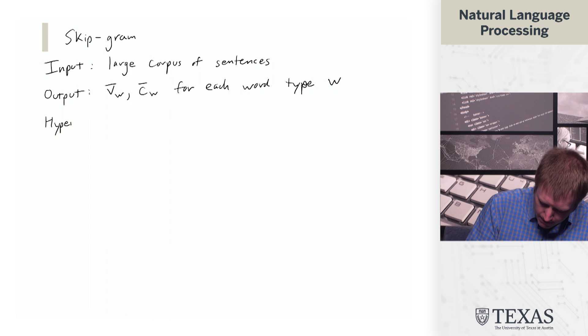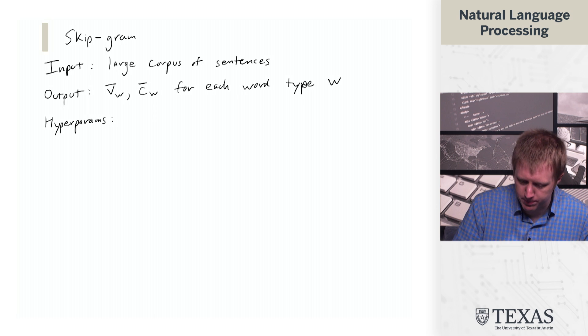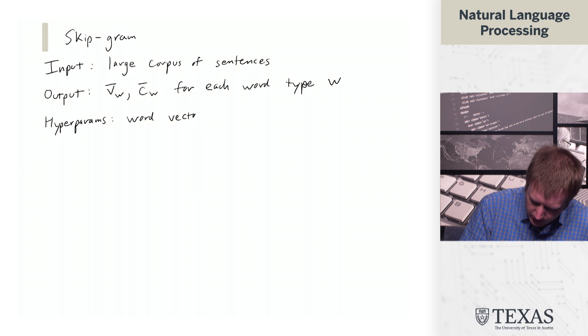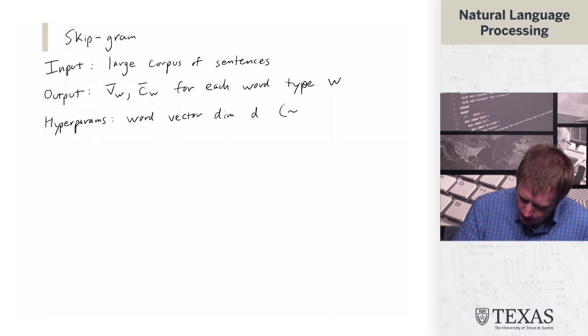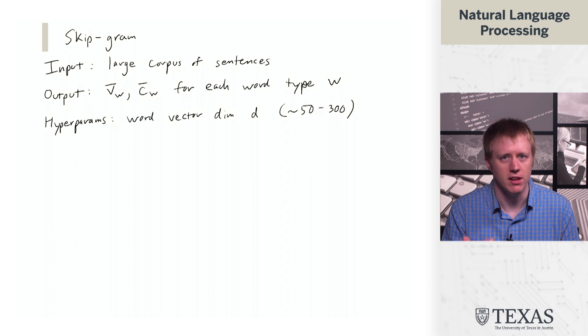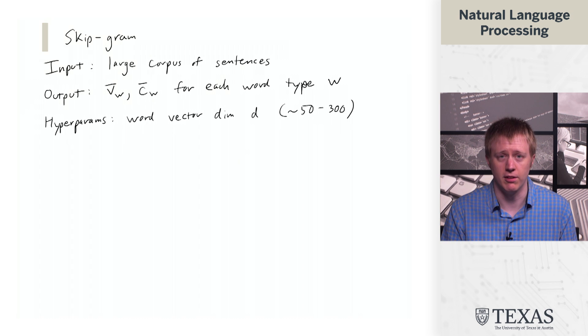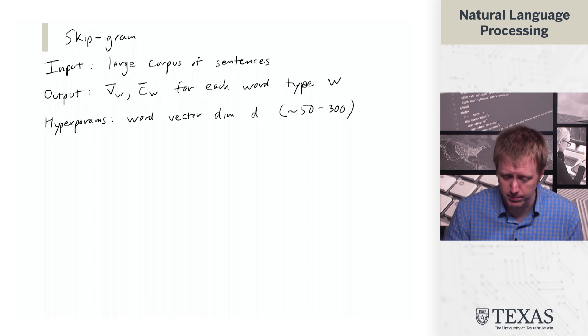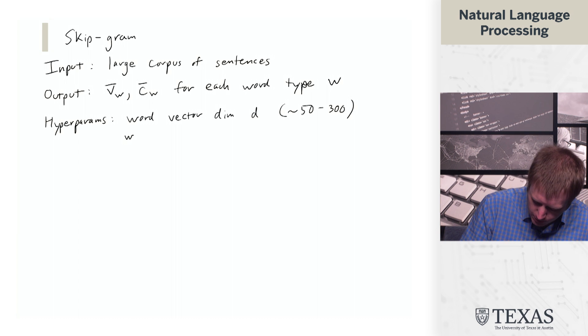The hyperparameters of this method are a word vector dimension D, which maybe we could use 50 or 300 or something in that range. These are common values that you see in kind of precomputed and distributed word embeddings.